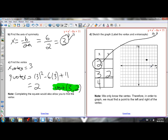So if I put in 2 for x there, I will get a y-coordinate of 3. 2 squared is 4 minus 6 times 2. So 4 minus 12 is negative 8 plus 11 is 3.